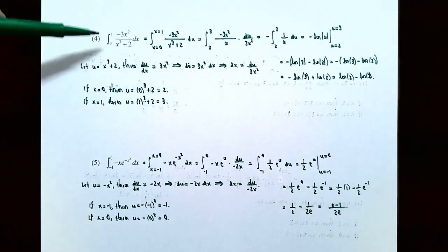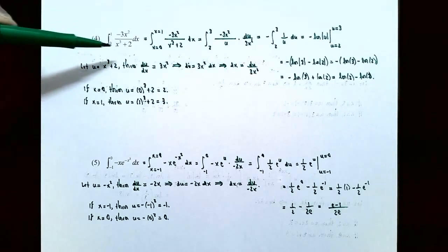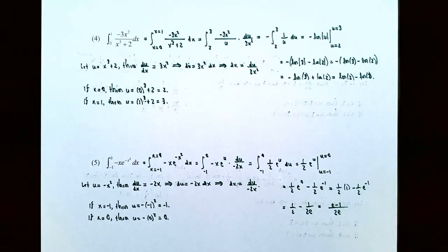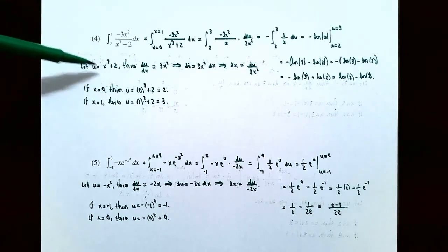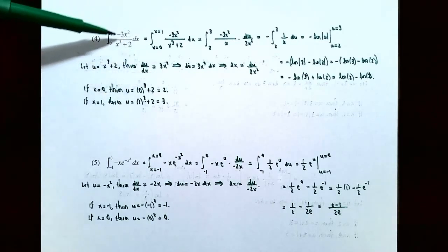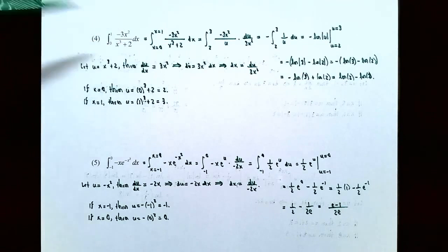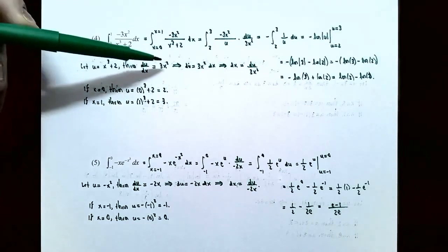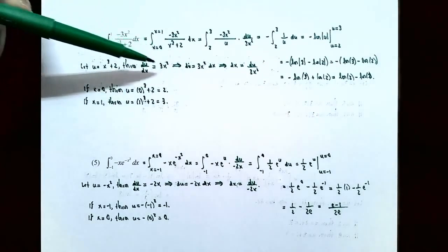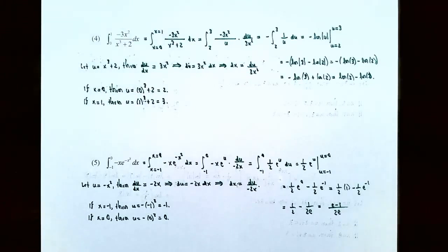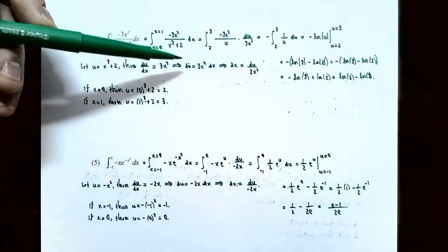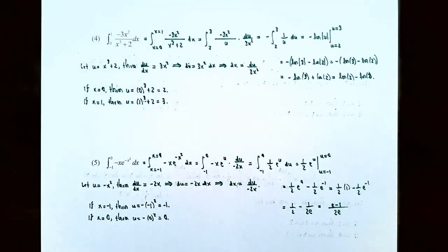Number four: the definite integral from x equals 0 to x equals 1 of negative 3x squared divided by (x cubed plus 2), dx. The integrand is a rational function, but not simply 1/x. We need the substitution rule to simplify. Let u be the denominator: u equals x cubed plus 2. The derivative of u with respect to x is 3x squared — notice there's a 3x squared in the numerator (multiplied by negative 1), so it will cancel. Thus du/dx equals 3x squared, giving du equals 3x squared dx, and solving for dx gives dx equals du divided by 3x squared. We also need to change the limits x equals 0 and x equals 1 to be in terms of u.